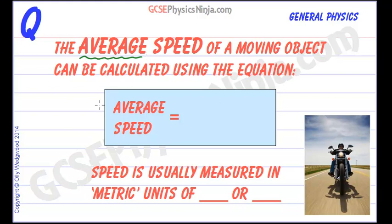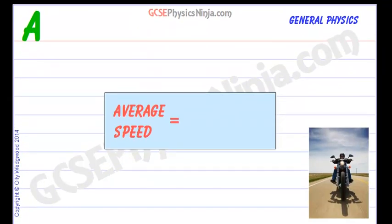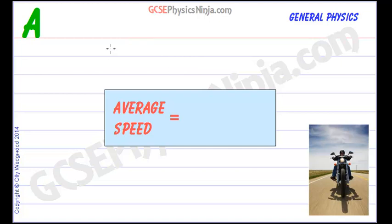So how do we remember the equation? Well, before we do the equation, let's look at the second part of this flashcard. Speed is usually measured in metric units of, what are the two here that we usually use for metric units of speed? Well, the metric units of speed would be, for example, meters per second or we could use kilometers per hour.